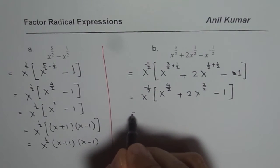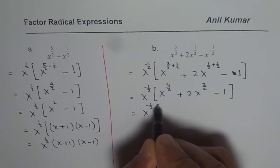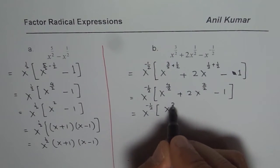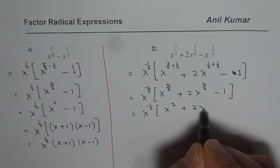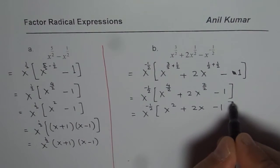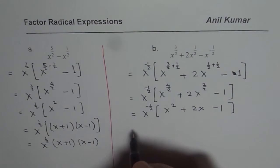Kind of like this. And then we have x to the power of minus half and the bracket, we get x squared plus 2x minus 1. You get the idea. Now that is a trinomial, which we know how to factor.